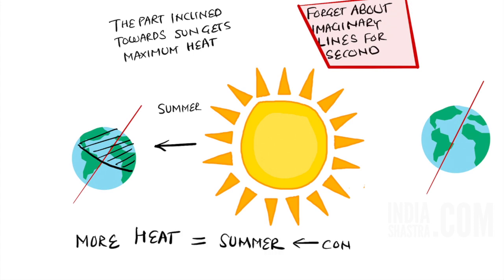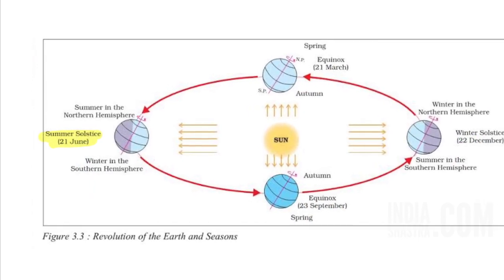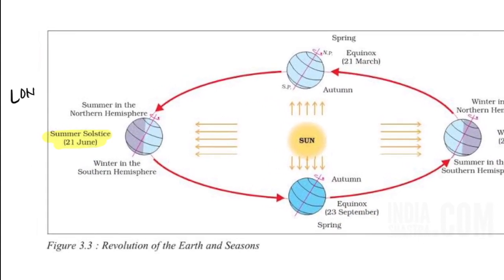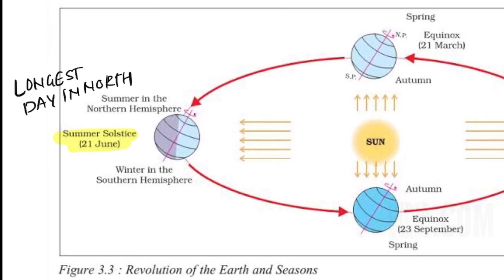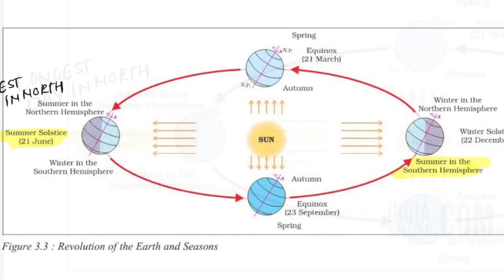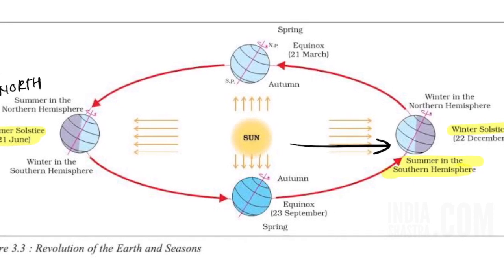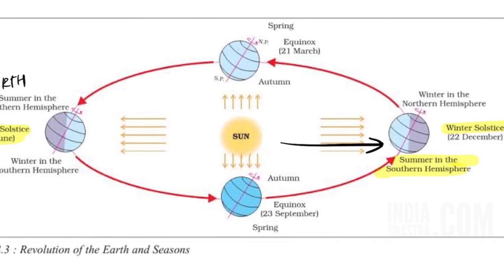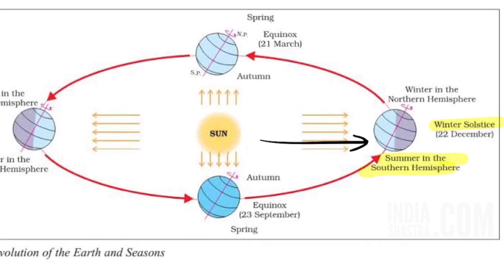This was the concept. Now, let us talk about the facts. 21st June is summer solstice. It is the longest day in the Northern Hemisphere and shortest day in the Southern Hemisphere. In contrast, on 22nd December, Tropic of Capricorn receives direct ray. Therefore, it is summer in the Southern Hemisphere and winter in the Northern Hemisphere.